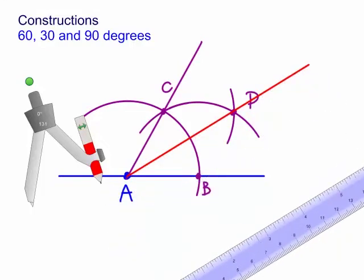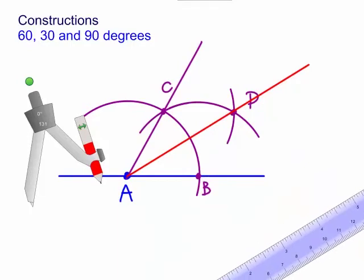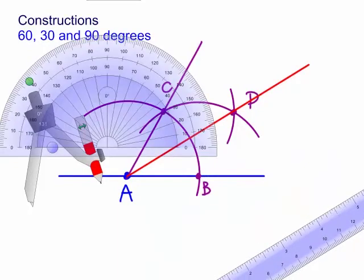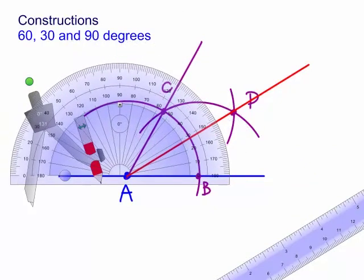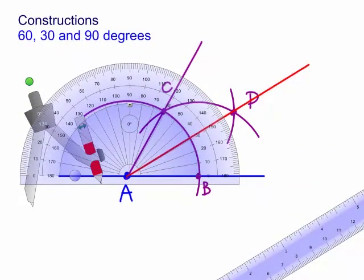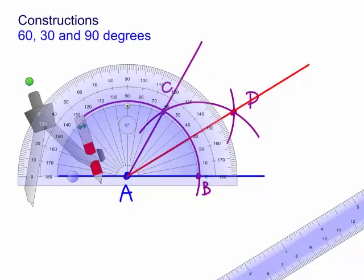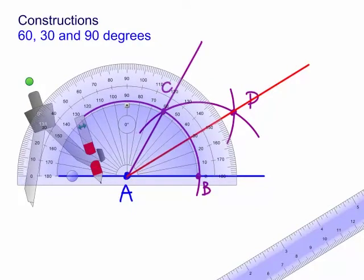The ruler is measuring it at 30 degrees, but let's actually get our protractor again. Let's move it across and have a quick look. You can see it's not too bad, it's a pretty good bisection of that angle 60 degrees to 30 degrees. Angle DAB is now 30, and angle CAB is 60.